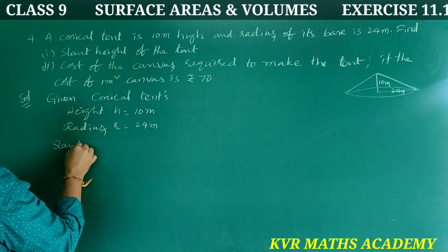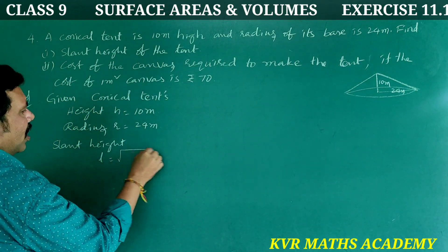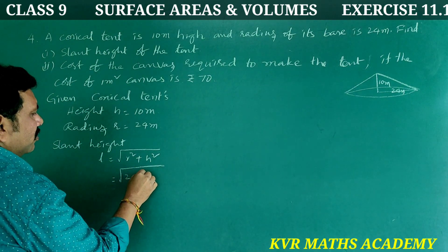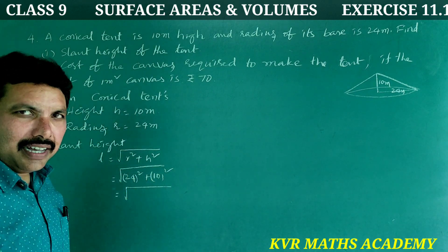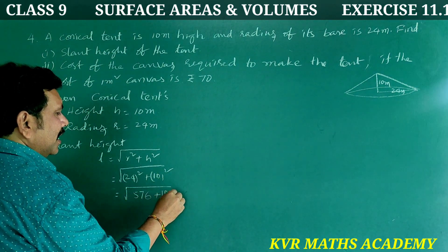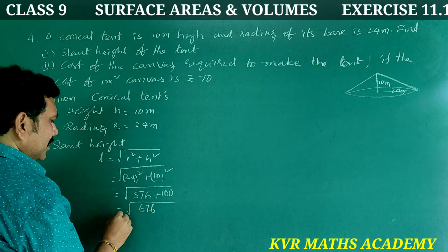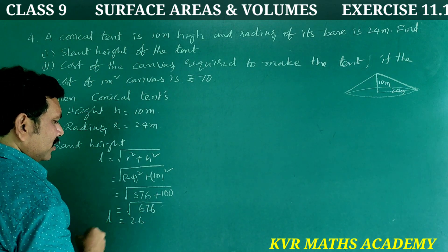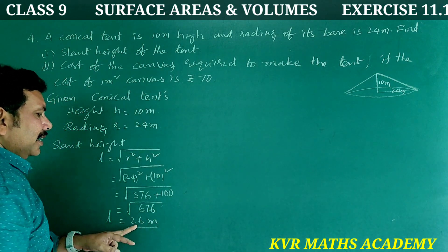Now, slant height L = √(r² + h²) = √(24² + 10²) = √(576 + 100) = √676 = 26 metres. So the slant height is 26 metres.